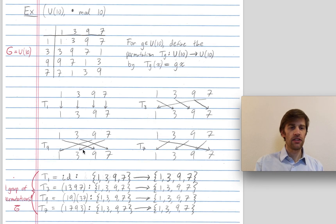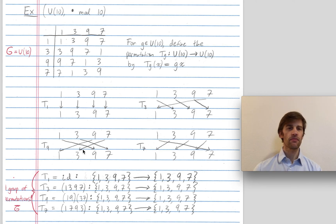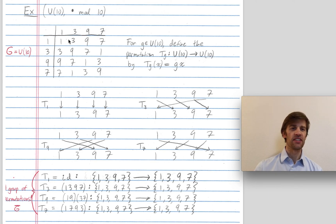Okay, we'll return to this proof in a moment, but let me give you an example first. Let's consider the group U10, the group of units mod 10. Its elements are all the numbers up to 10 that are relatively prime to 10, so 1, 3, 7, and 9. The operation is multiplication mod 10. Here I've drawn the Cayley table or multiplication table for this group. I've ordered it with 9 coming before 7 just to exhibit the isomorphism with ℤ mod 4, the cyclic group of order 4.